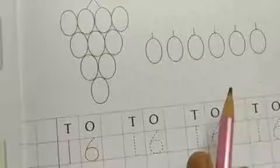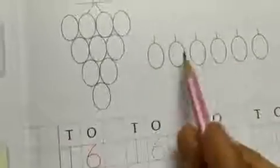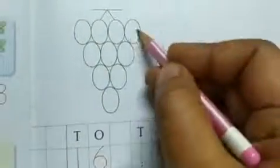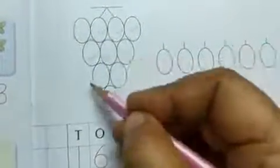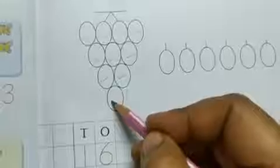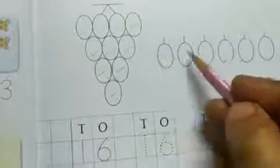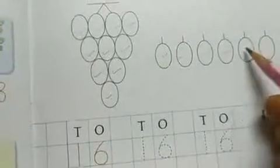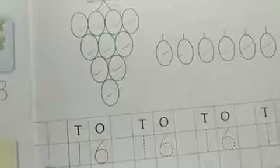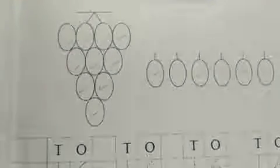So first of all, how many grapes are there? We will count how many grapes are there. So first of all, we will count on them. 1, 2, 3, 4, 5, 6, 7, 8, 9, 10, 11, 12, 13, 14, 15, 16. Right? So 16 grapes are here.